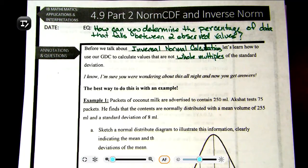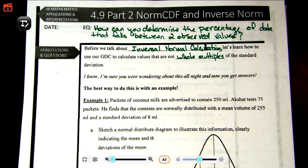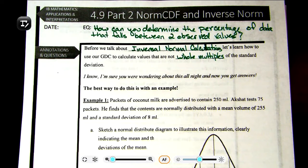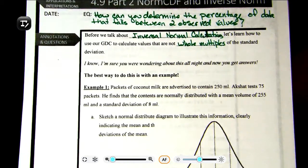Last class, we discussed the empirical rule and how you could find percentages or area under a curve within one, two, and three standard deviations of the mean. But the issue now is what happens if we have one and a half standard deviations, or what if you have a percentage? How can you find the area under a curve that doesn't fit an exact whole multiple of the standard deviation? That's what we're going to do today. Let's jump into an example.